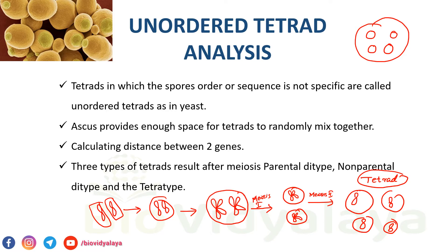In ordered tetrad analysis we calculate the distance between the gene of interest and the centromere. But here in unordered tetrad analysis we are calculating the distance between two genes — for example, gene A and gene B. This analysis can determine if the genes are linked or assort independently.